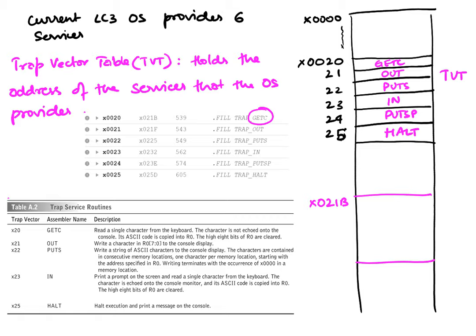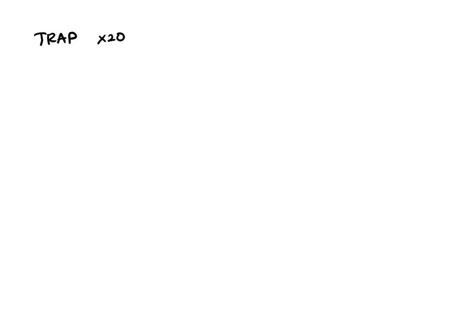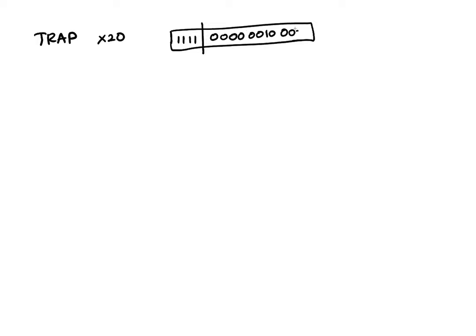Let's see how this is implemented. When I say an operation like TRAP 0x20, the machine code is simply 1111 — that's the opcode — followed by the trap number in the remaining bits: 0000 0010 0000, which is 0x20.